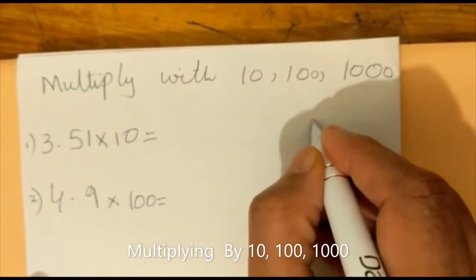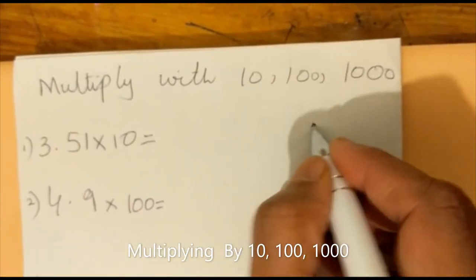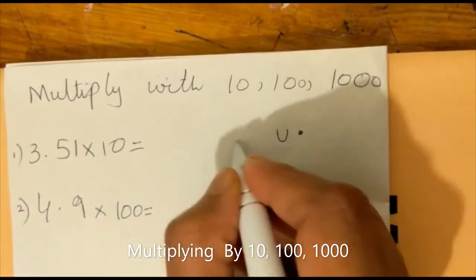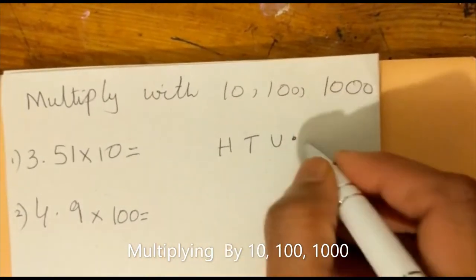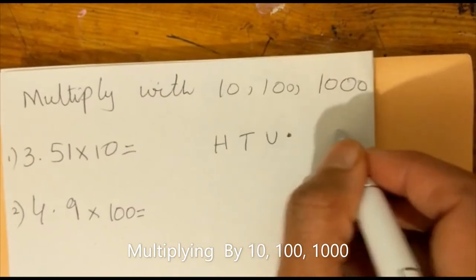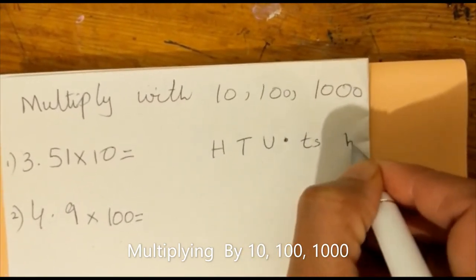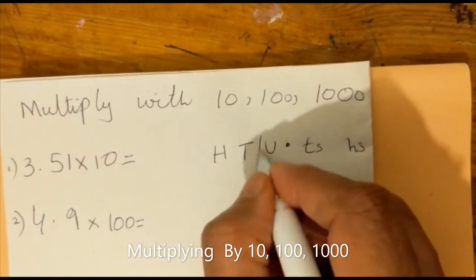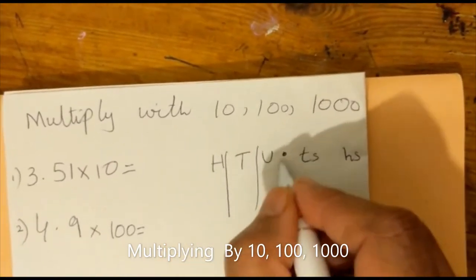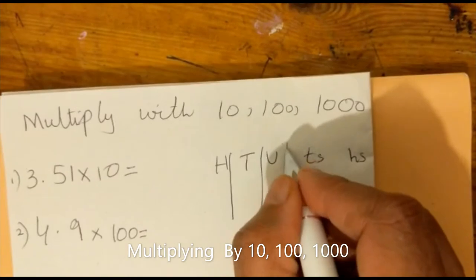First we have a decimal here. On this side: units, tens, and hundreds. And decimal on this side: units, tens, and then hundreds. Now let's make a column for this line so we can easily find it.